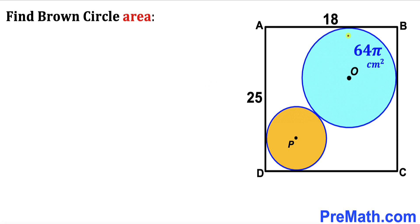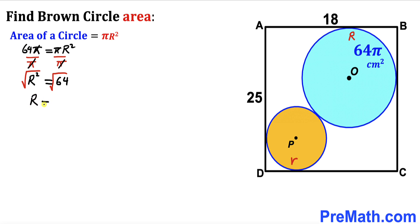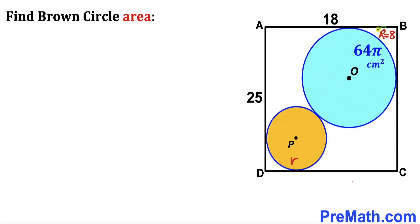Let me label the radius of the blue circle as uppercase R and the radius of the brown circle as lowercase r. Recalling the area of a circle formula — Area = πR² — and substituting the given area of 64π, we get 64π = πR². Dividing both sides by π gives R² = 64, and taking the square root gives R = 8 cm. So the radius of the blue circle is 8 cm.